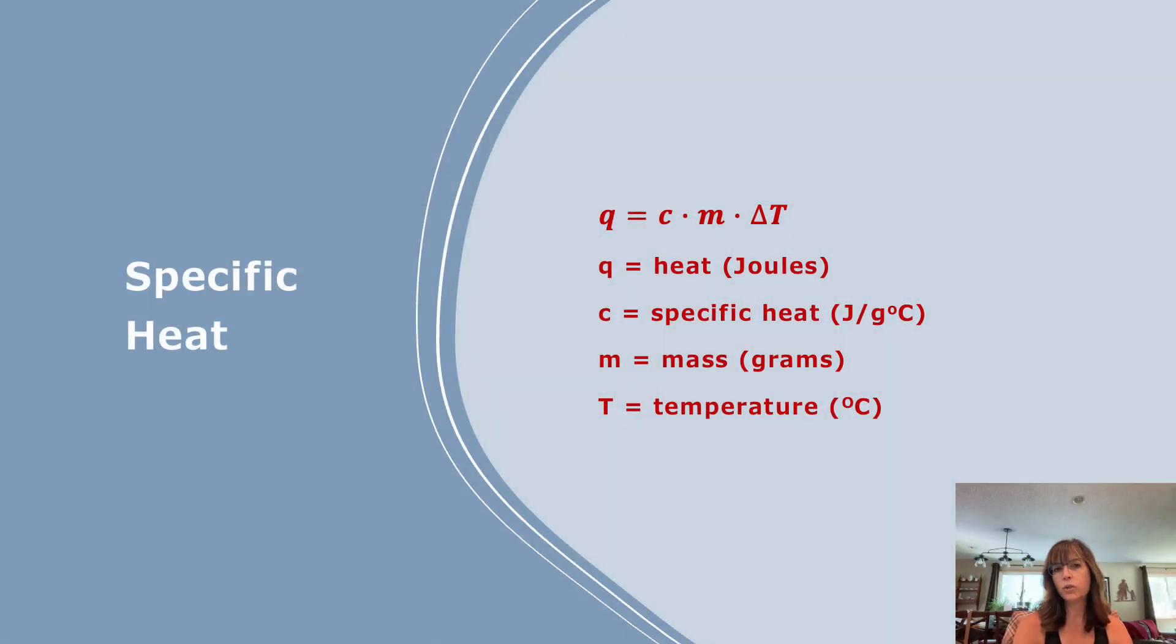This equation should look familiar to you. This is the specific heat equation, where Q equals CM delta T. Q is the heat given in joules. C is the specific heat of the metal or the water, whatever you're using. And it does have kind of a strange label, joules per gram degree Celsius. Mass is always in grams and temperature is in degrees Celsius. For the record, temperature can also be in Kelvin. Now, why does specific heat have such a weird label? Well, if you look at the fact that you're multiplying it by mass and by temperature, grams and degrees Celsius will cross off, leaving you with joules. And this is why Q is given in joules.